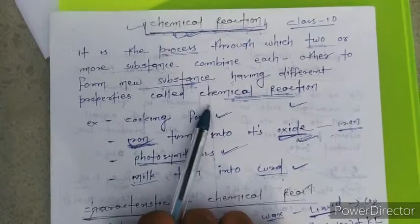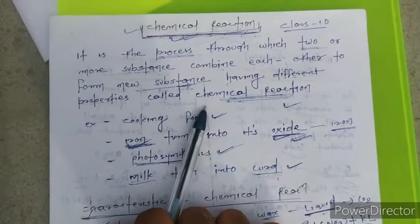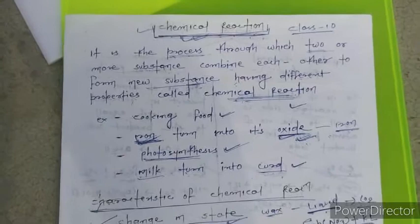What is a reactant? It is the substance which takes part in the chemical reaction. The substance formed after the chemical reaction is called the product. The product is completely different from the reactant.